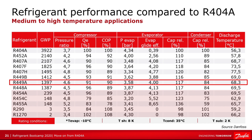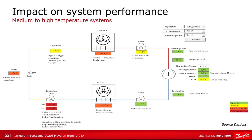Looking at the refrigerant landscape compared to R404A, highlighted on the slide is R449A, which is quite often used in service. Let's take a closer look at the performance. This calculation tool shown on the slide is available in the Danfoss CoolSelector software. In the top right-hand side, you can see we put the application — in this case refrigeration, because we are medium temperature. We choose our old or existing refrigerant, which is R404A, and then the new refrigerant, which is R449A.